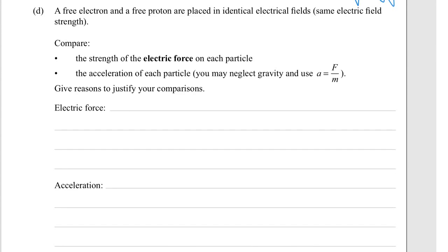Part D: A free electron and a free proton placed in identical electric fields, same electric field strength. Compare the strength of the electric force on each particle and the acceleration of each particle. And we can neglect gravity and use a = F/m. Give reasons to justify your comparisons.